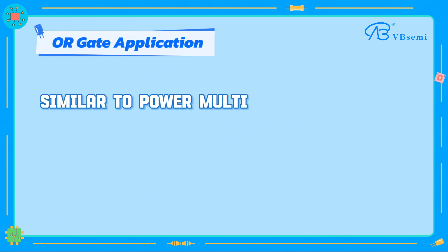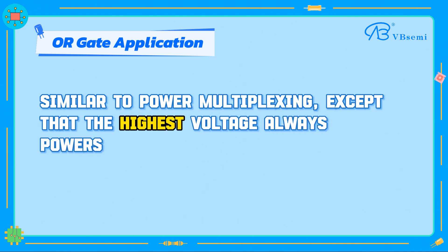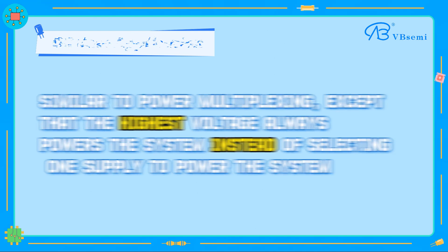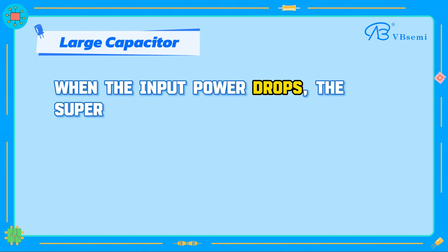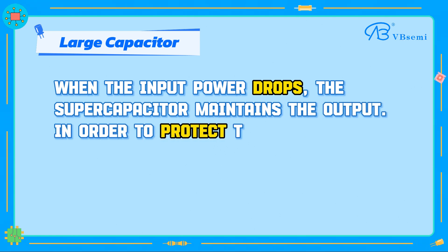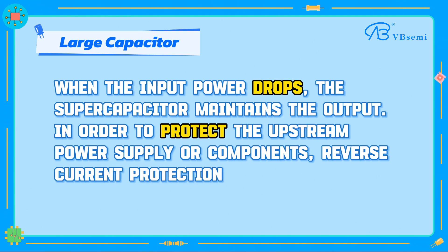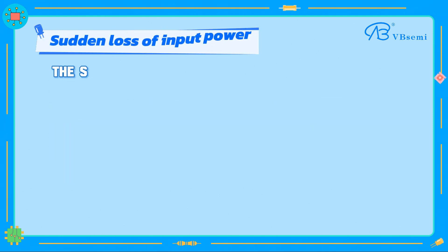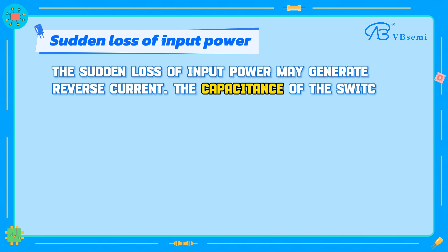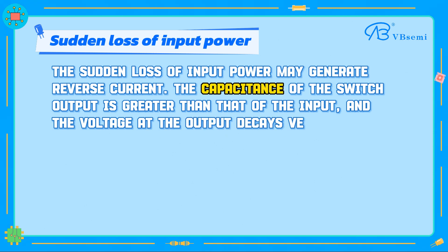When an OR-gate configuration is used, it is similar to power multiplexing, except that the highest voltage always powers the system instead of selecting a specific supply. For large capacitance scenarios, when the input power drops, a supercapacitor maintains the output. In order to protect the upstream power supply or components, reverse current protection needs to be set. The sudden loss of input power may generate reverse current, as the capacitance at the switch output is greater than at the input, and the voltage at the output decays very slowly.